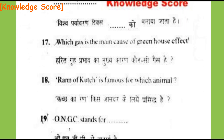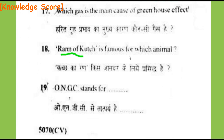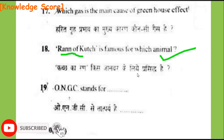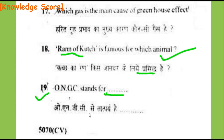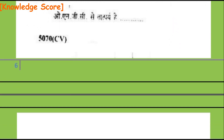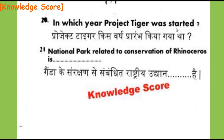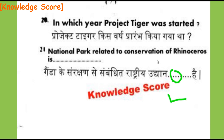Question 18, Section C: Rann of Kutch is famous for which animal? Question 19: What does ONGC stand for? Write the full form. Question 20: In which year was Project Tiger started? Question 21: Fill in the blank — which national park is related to the conservation of rhinoceros?